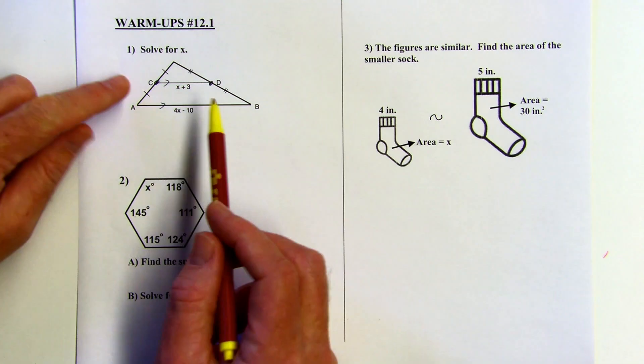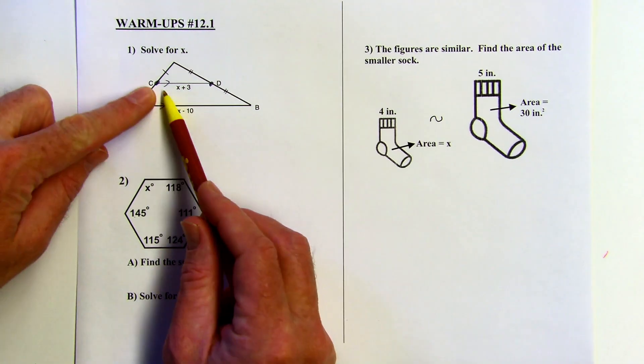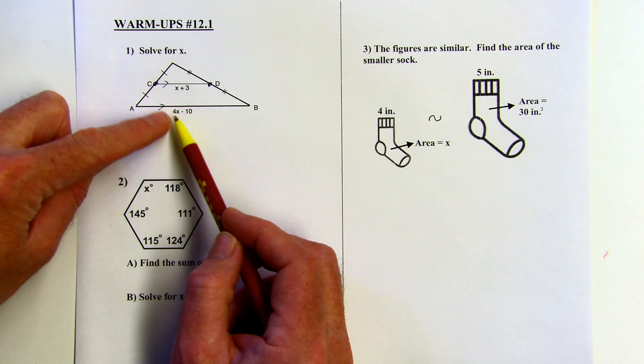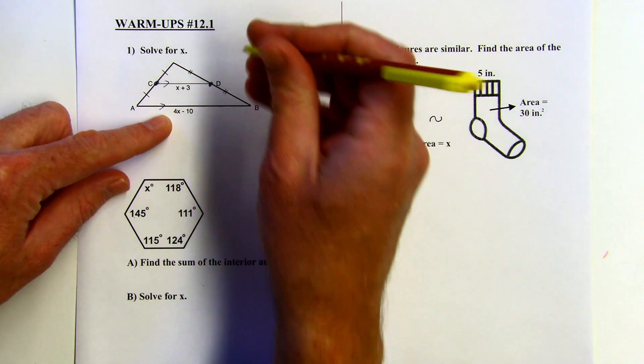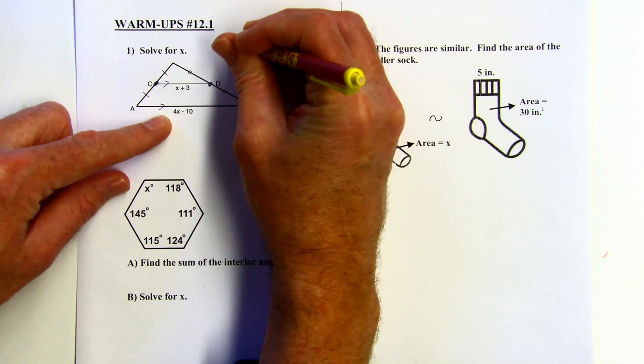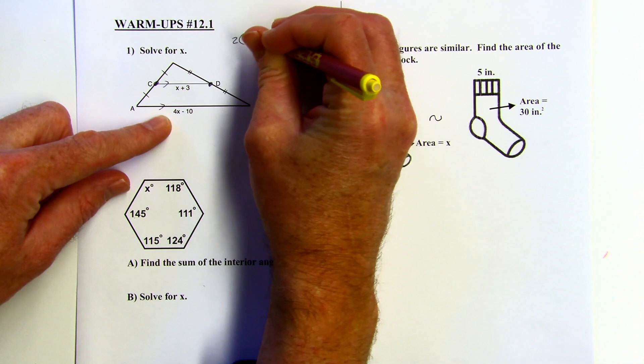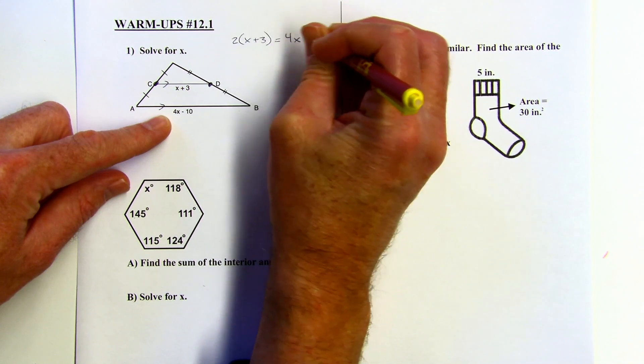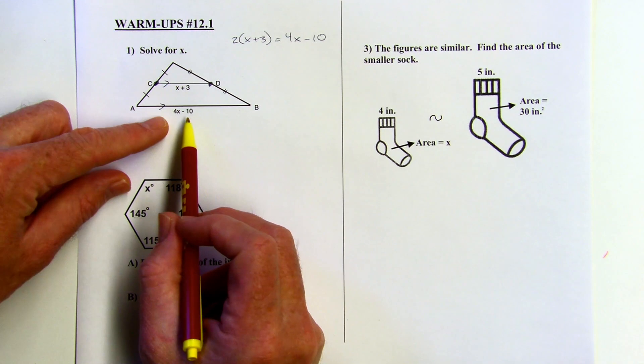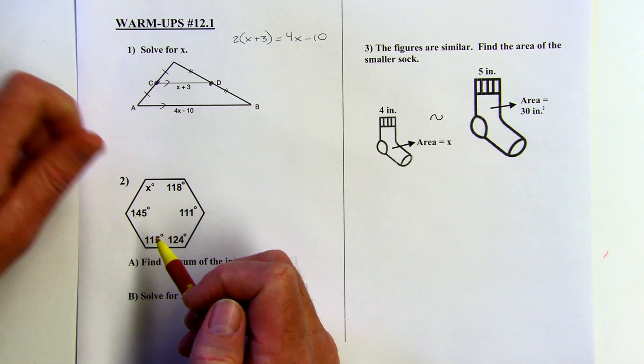So what I can do is I can say if I double the 2X plus 3, it should equal 4X minus 10. So that's what I'm going to do. So I'm going to say 2 times the quantity X plus 3 equals 4X minus 10. You could also say half of 4X minus 10 would equal X plus 3. That would work as well.